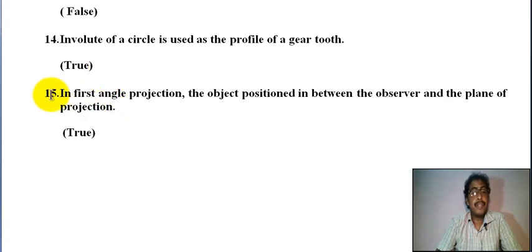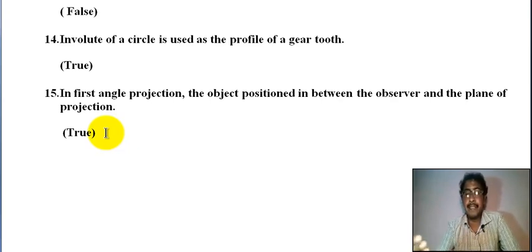Number fifteen: in first angle projection, the object position in between observer and the plane of projection. It is true. In first angle projection, first observer, then object, next plane of projection. It is true.